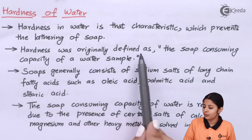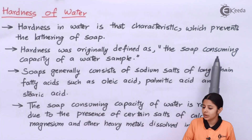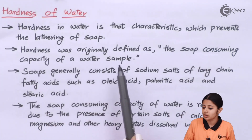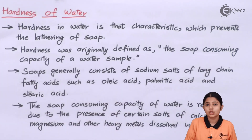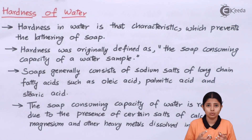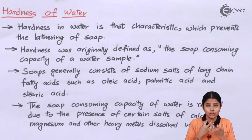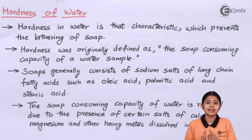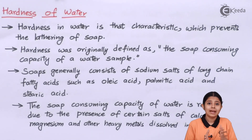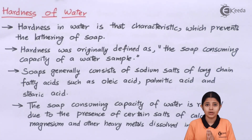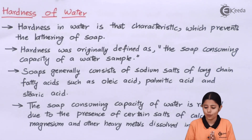Hardness was originally defined as the soap-consuming capacity of a water sample. Why do we use the term soap-consuming capacity? Because hard water consumes the soap and makes scum out of it rather than enhancing the properties of soap and producing lather. That is the reason why hard water was originally defined as the soap-consuming capacity of water.